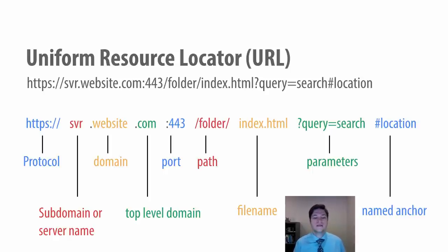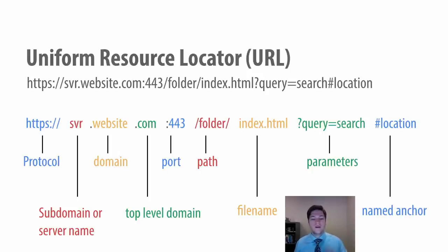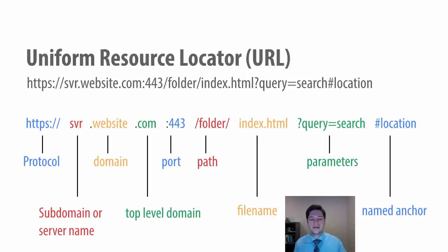Moving on to ports — something we don't see often because there are defaults. Colon 443 is the default port for a secure HTTPS connection, and we rarely see it unless doing technical configuration work. Colon 80 is the default port for HTTP. The protocol and the port are both labeled in blue because they interrelate — there's a link between them.